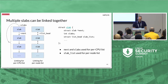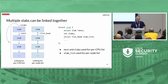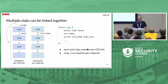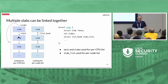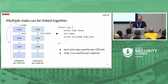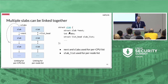Multiple slabs can be linked together in two different ways. The first is a singly linked list — there is a 'next' pointer within the slab structure, used for per-CPU lists, along with a 'slabs' integer field tracking how many slabs are on the list including the current one. The second way is a doubly linked list via a list_head structure, used for per-node slabs. So these are the two different ways multiple slabs can be linked together.